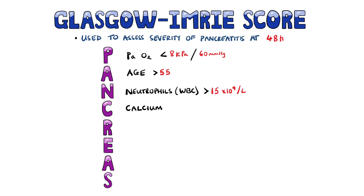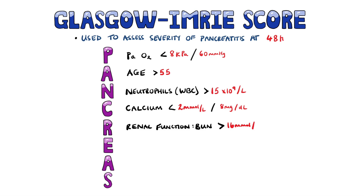C is for calcium levels below 2 millimoles per litre, or 8 milligrams per deciliter. And R is for renal function — to help you remember, a urea level above 16 millimoles per litre, or 45 milligrams per deciliter.